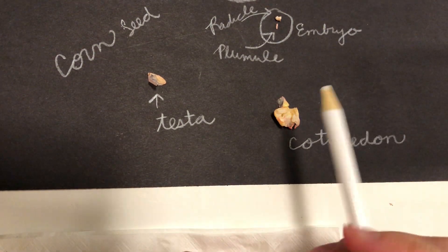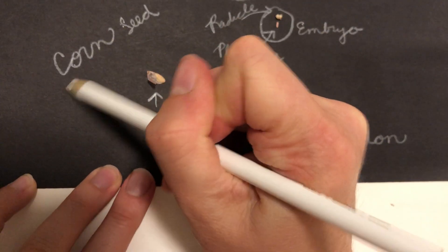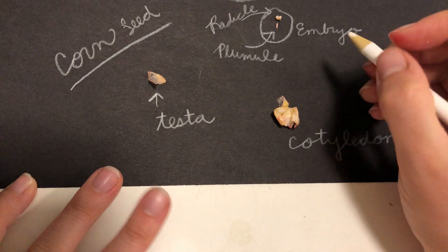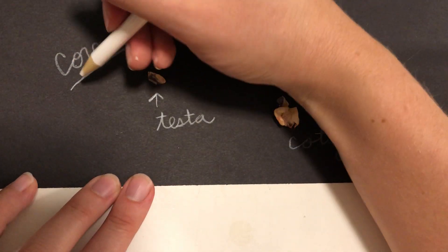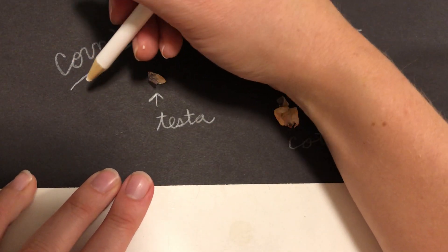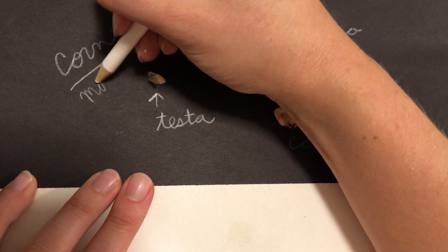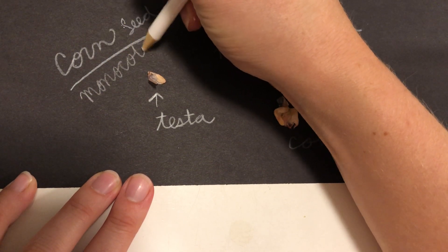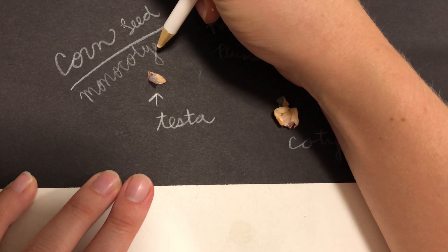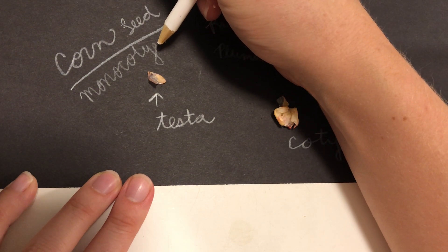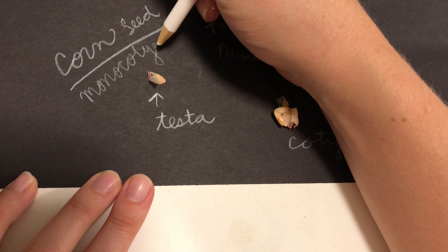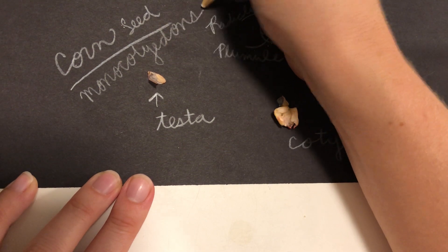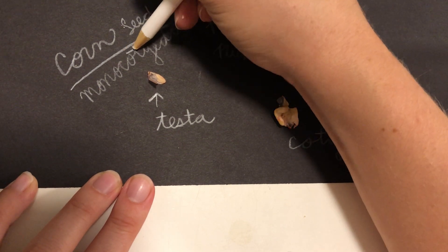You'll notice that the corn seed only has one cotyledon. So this would be a monocotyledon.